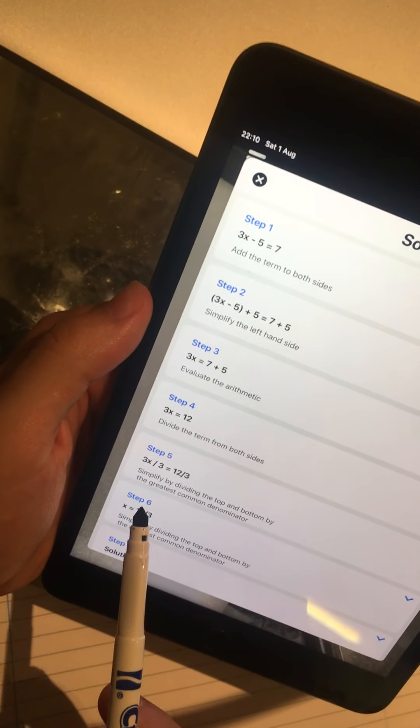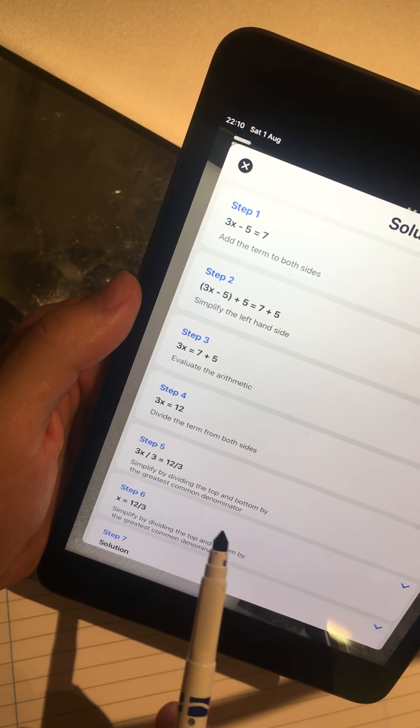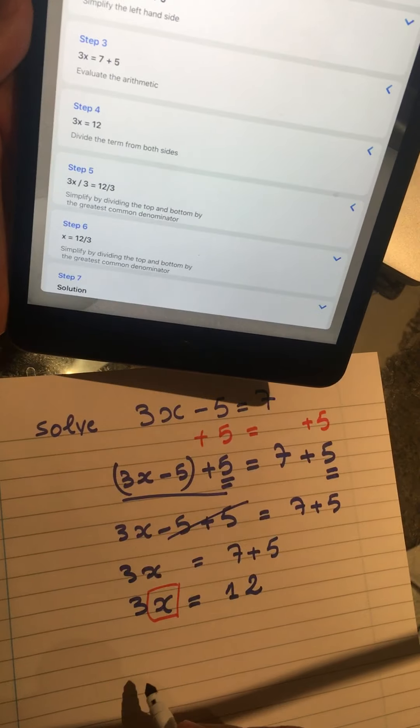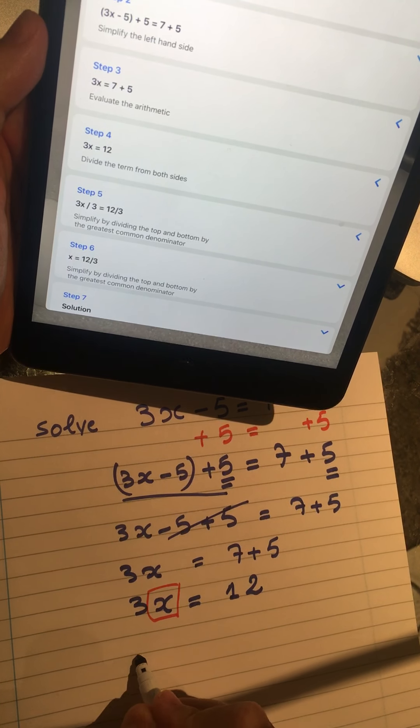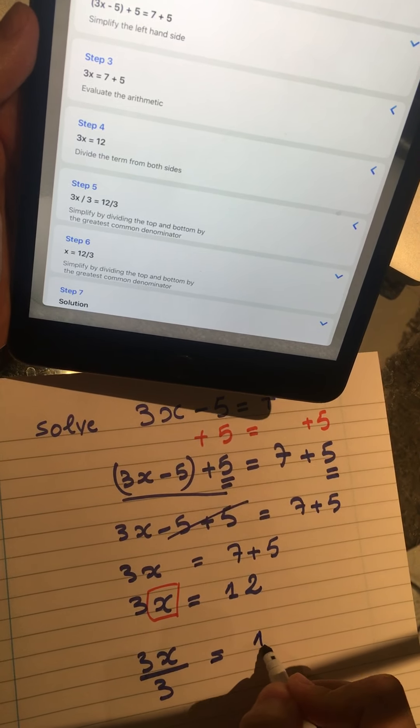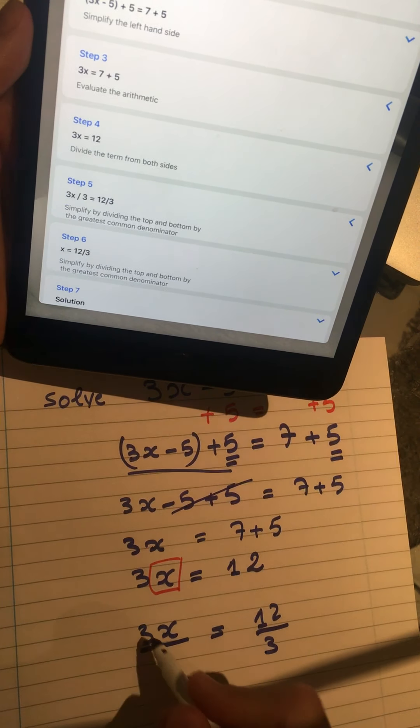Divide by simplifying the top and the bottom by the greatest common denominator, which is 3. So here will be 3x divided by 3 equals 12 divided by 3, and then 3 goes by 3 will be x equals 12 by 3.